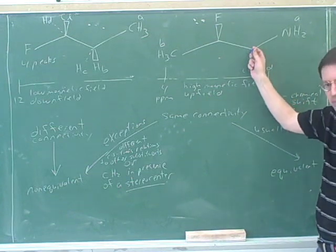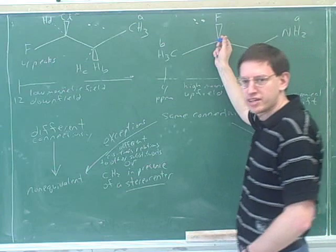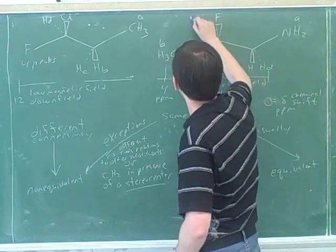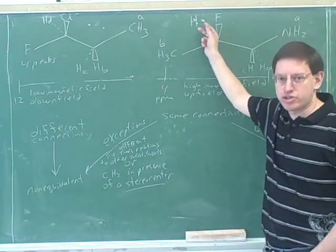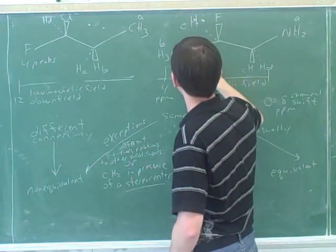Good. Normally we would have treated these as equivalent because they're on the same carbon, but here the exception kicks in because they're in the presence of this stereocenter. So now they are non-equivalent. And it was good that you saw there was a hidden hydrogen. I have them drawn. You have to watch out for those hidden hydrogens. So that would give us E and five peaks.